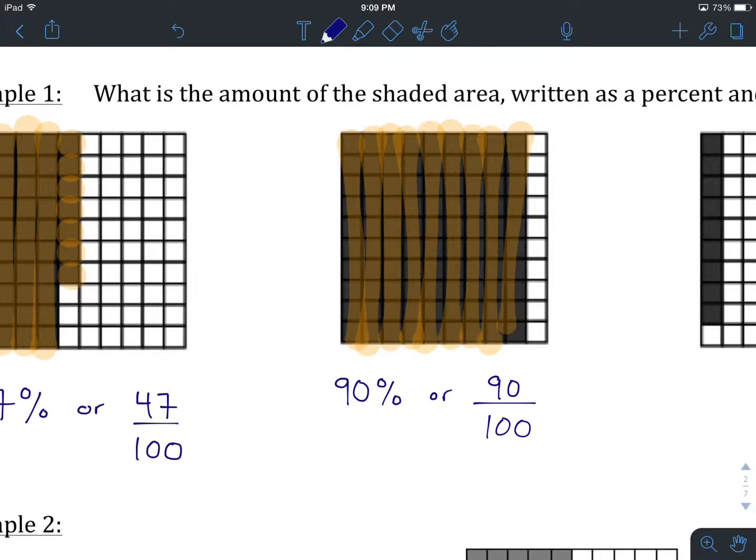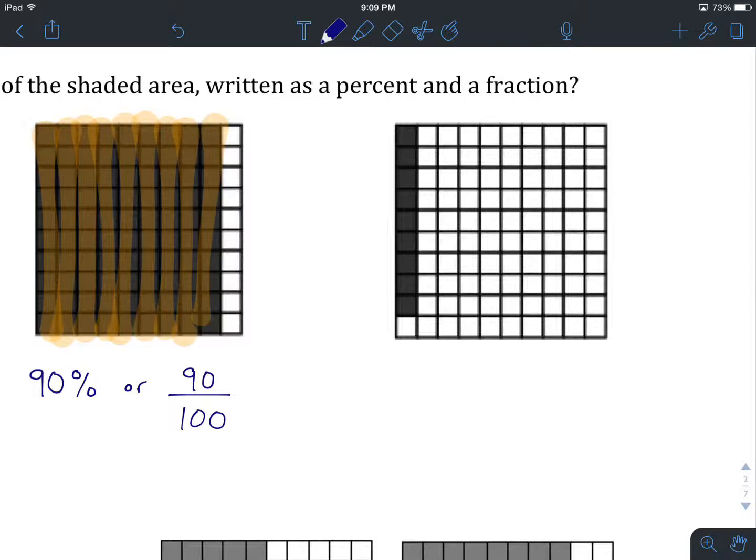So I'd like you guys, at this point, to hit pause in the video, and I'd like you to take a crack at this third square on your own. Hit pause, count up the number of shaded spots, write it as both a percentage and as a fraction, and then come on back.